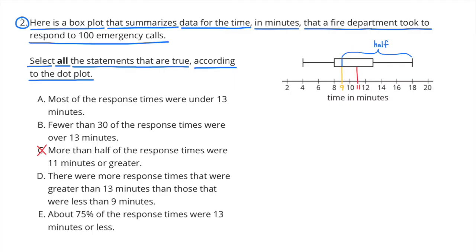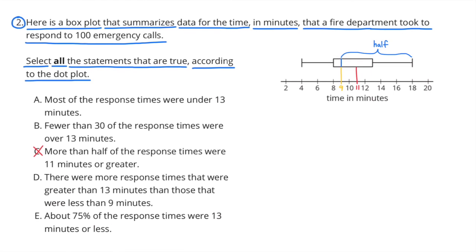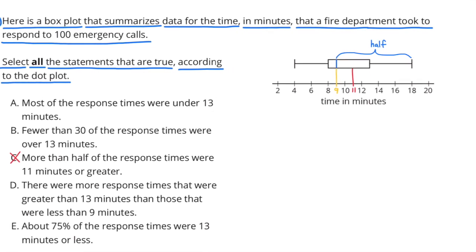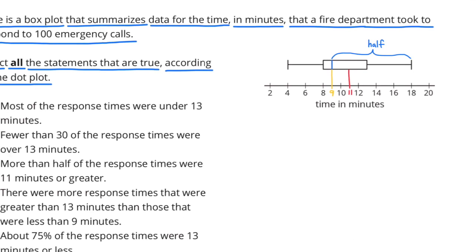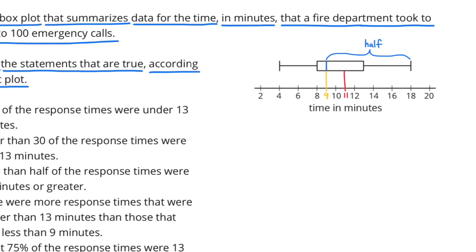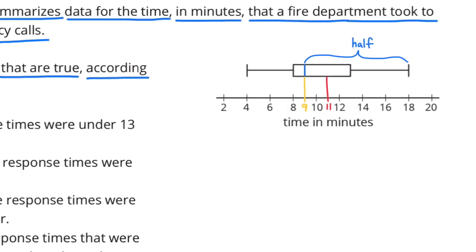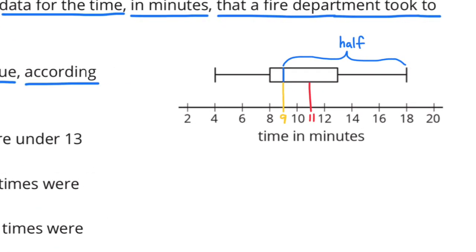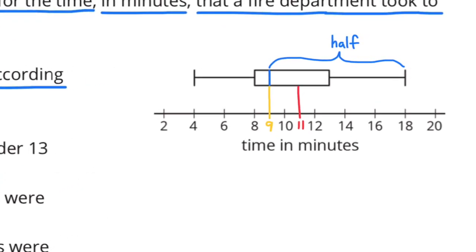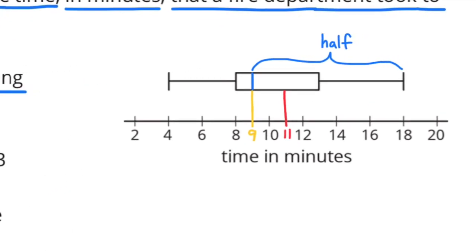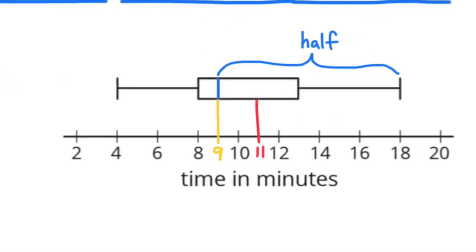Statement C: More than half of the response times were 11 minutes or greater. That is not true, because half of the response times were 9 minutes or greater. Remember that quartile 2 is the median, and the median represents half the data. The median is 9, not 11.